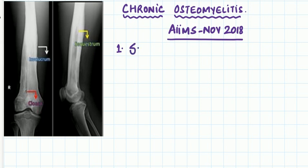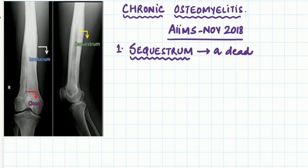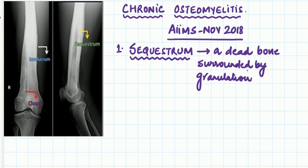The hallmark of chronic osteomyelitis is the sequestrum. We all know the definition, but we should also know how it looks on X-ray. A sequestrum is basically a dead bone surrounded by granulation tissue. If you look at this femur, under the circle drawn, you can see a white projection of bone — that is what you call a sequestrum.